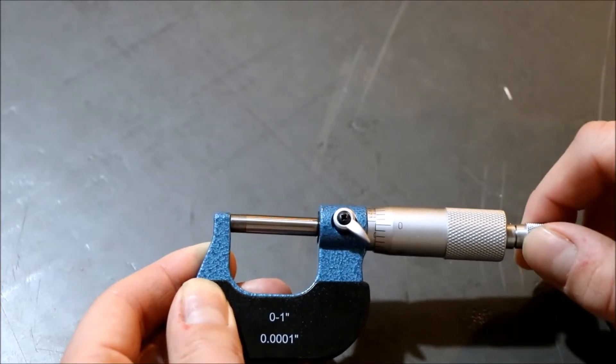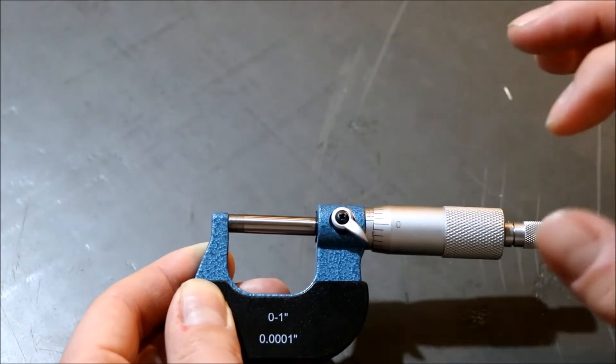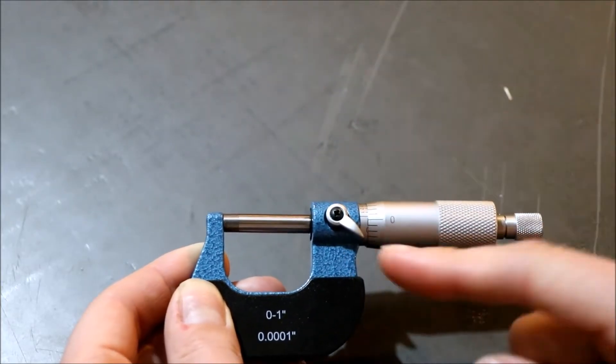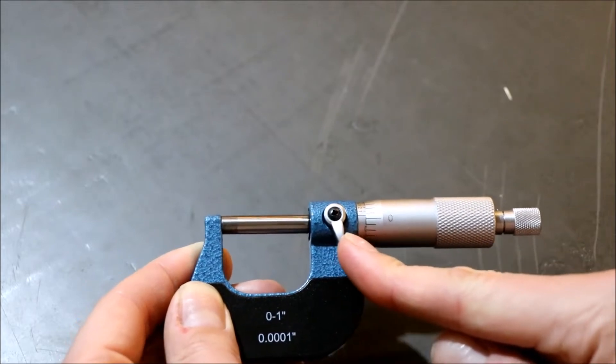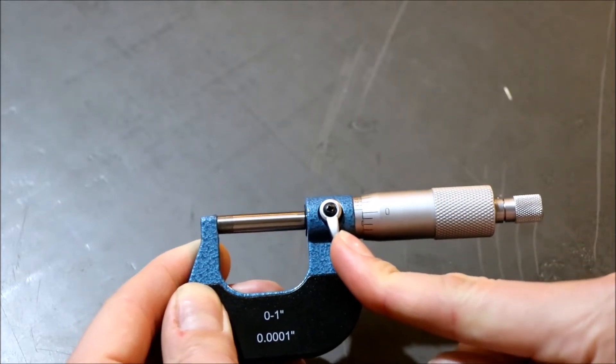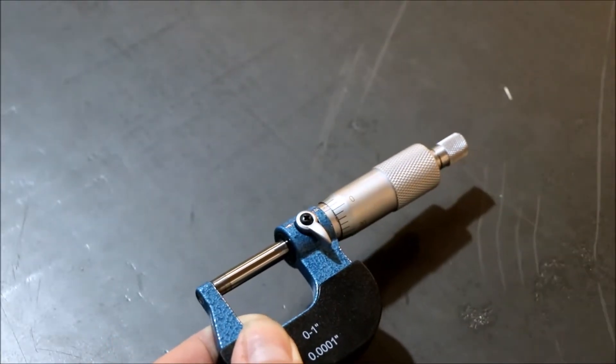it touches and clicks. You don't want to crank down on it or anything. And then what I'll do is I'll lock my little barrel lock here. Make sure you don't bump anything in the process, and you